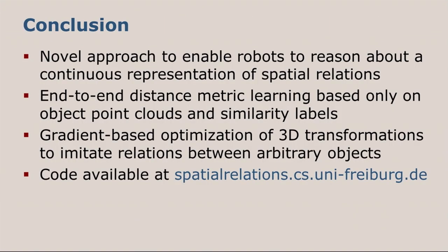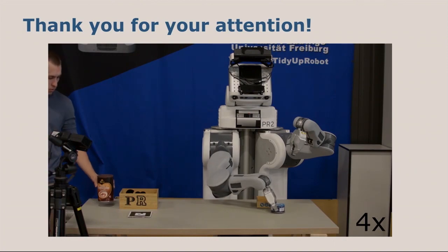To conclude, we have proposed a novel approach that enables robots to have a continuous representation of spatial relations. For this, we only required point clouds and similarity labels as inputs, so no manual feature design is required. The nice thing about this continuous representation is that we can use an intuitive gradient-based formulation to imitate spatial relations. Our code will soon be available at the given website. With this, I'd like to thank you for your attention and I'm happy to answer questions.